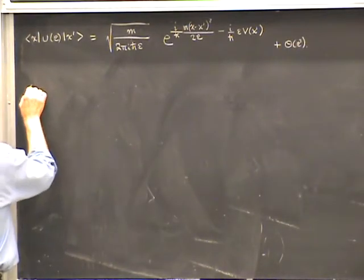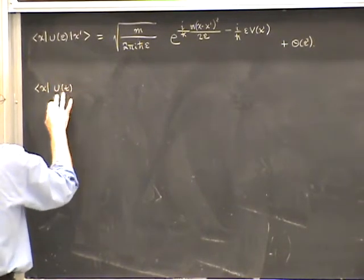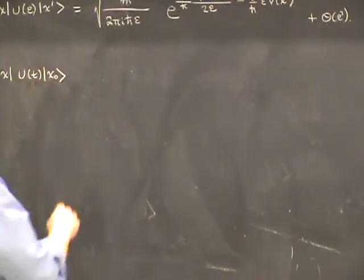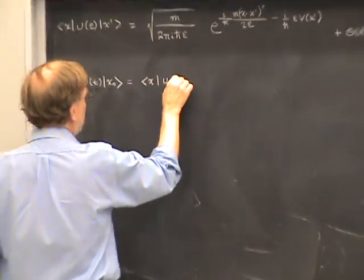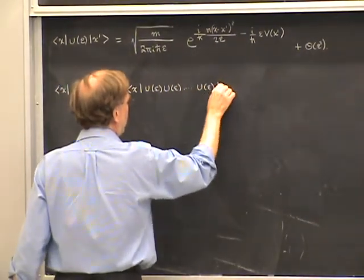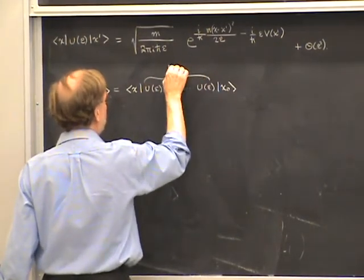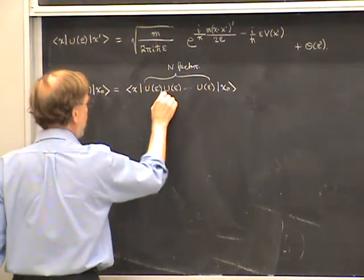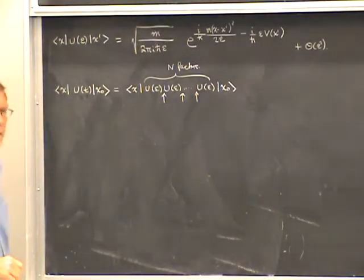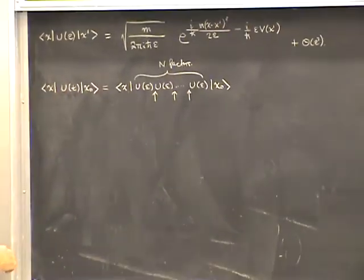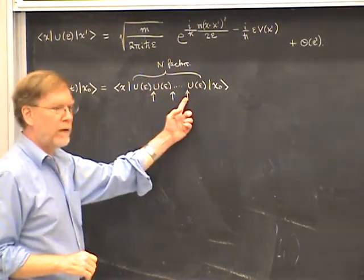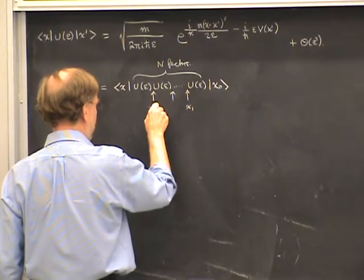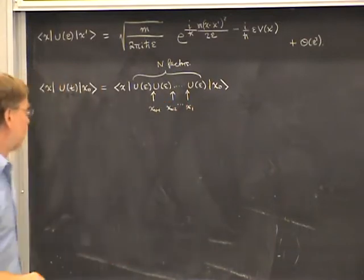To go back to the actual propagator for some finite time U(T) sandwiched between ⟨X| and |X₀⟩: U(T) is U(epsilon) raised to the Nth power, so this is ⟨X| followed by N factors of U(epsilon), acting on |X₀⟩. Now we insert a resolution of the identity in position space between each of these factors. Since there are N factors, there are N minus 1 slots, and we call the variables of integration X₁, X₂, and so on up to X_{N-1}. For notational symmetry, we define X_N as the final position X.